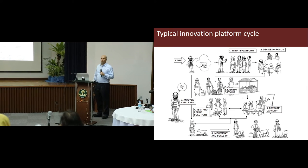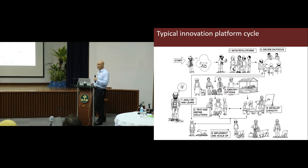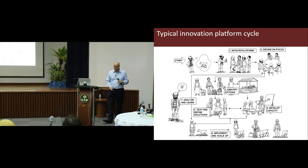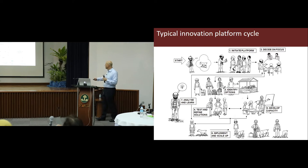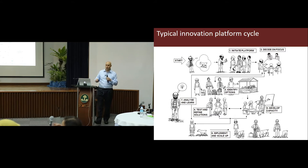You have a problem, whatever that might be, and you come together. The first thing you do is initiate the platform. Then you, together with the platform, decide on the focus. We then identify what options are available to tackle that, test and refine solutions. Once we have our solutions, we develop capacities to implement them and take them to scale. As we're doing that, we analyze and learn from our experience and the cycle goes on. This is a typical model of an innovation platform cycle.